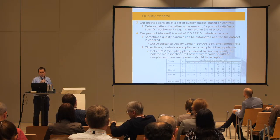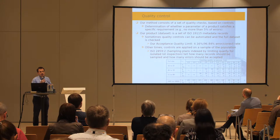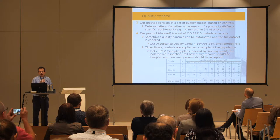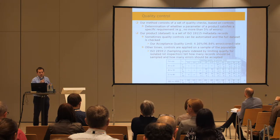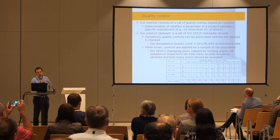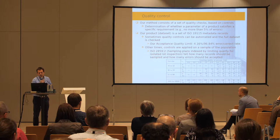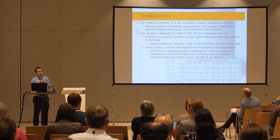In this case, our product is a set of metadata records. Some of the controls we propose are automatic or can be automated and are applied to the full dataset. We try to have an acceptance quality limit of around 5% of errors or 95% correct rate. But other times, controls must be manually applied.